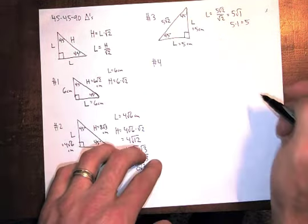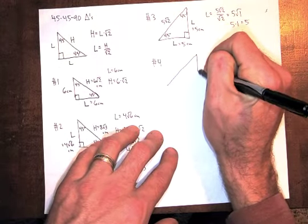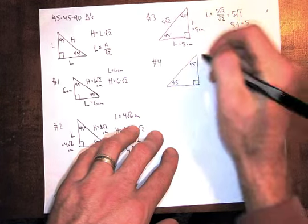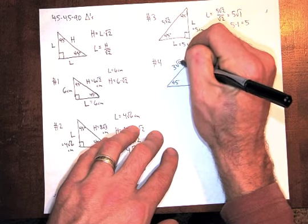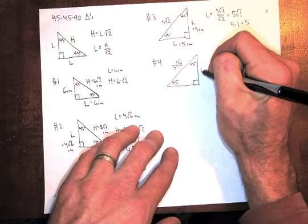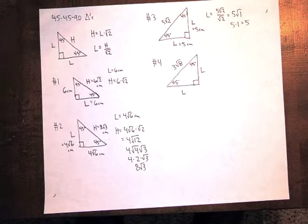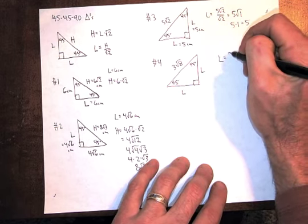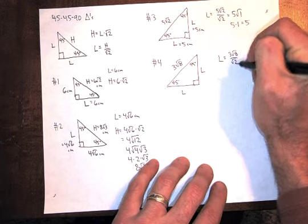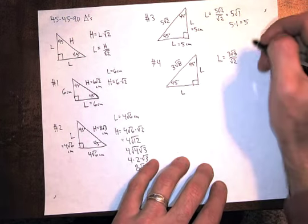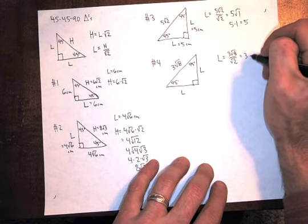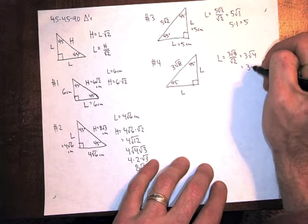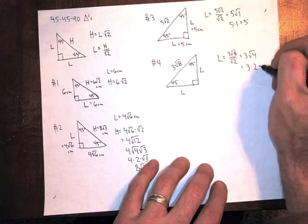Example number 4, a little bit different. What if the hypotenuse is kind of a weird radical? Like 3 square root of 8. And it says find the other two sides, which would be your legs. Well, use the formula. L equals H over square root of 2. So 3 square root of 8 divided by square root of 2. You can divide those radicals out and say 3 square root of 4, because 8 over 2 is 4. Which is actually just square root of 4 is 2. So we're talking 3 times 2, which is 6.